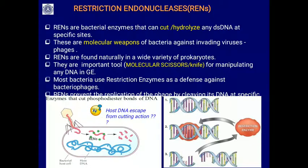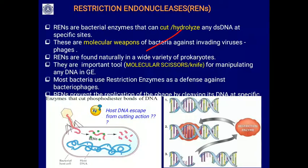Restriction endonucleases, also called REN, are bacterial enzymes that can cut or hydrolyze any double-strand DNA at a specific site, regardless of the origin of the DNA. This hydrolysis involves the addition of water. These are molecular weapons used by bacteria against invading viruses, called bacteriophages.